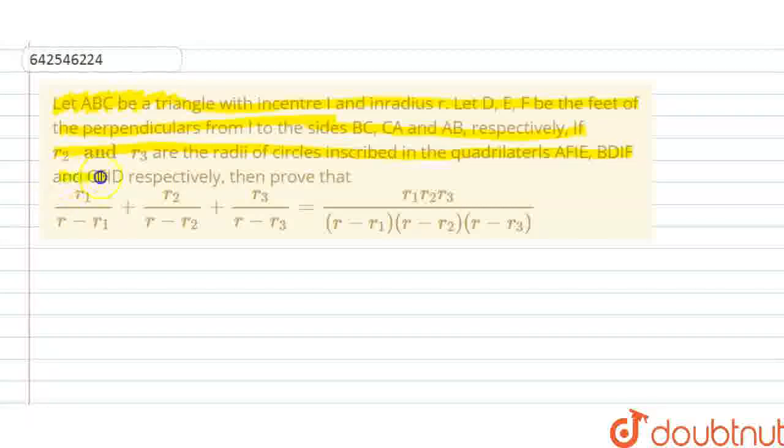Given that IE, BD, IF, and CE are ID respectively, we need to prove that R1/(R-R1) + R2/(R-R2) + R3/(R-R3) equals R1·R2·R3/[(R-R1)(R-R2)(R-R3)].